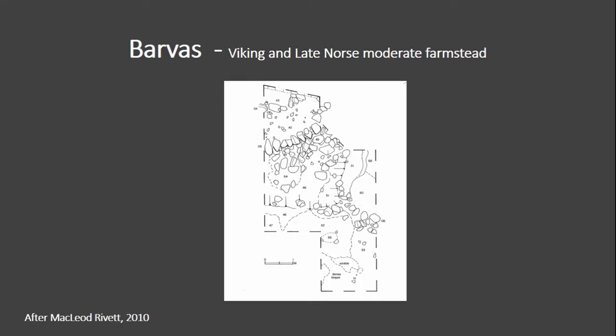One site I want to talk about in particular is called Bàrvas, excavated as a keyhole excavation on the northwest coast of Lewis. Bàrvas is very similar to Kilfadar — both are moderate, not too rich settlement sites with a similar function as secondary sites. However, Bàrvas has a double-skinned wall and is not subterranean, even though it dates from the same time period and has a similar function. So it cannot be called the Hebridean longhouse — it's more like a Norwegian longhouse but with a stone foundation.